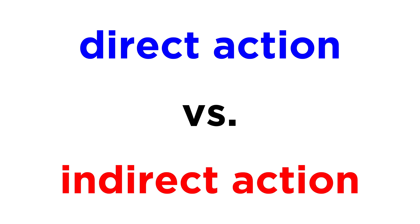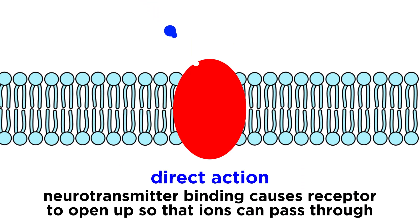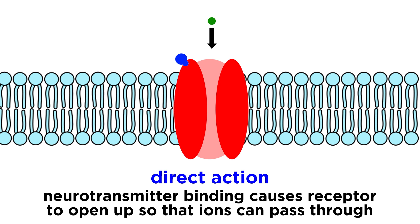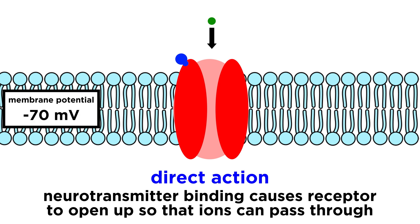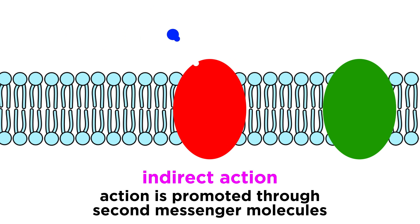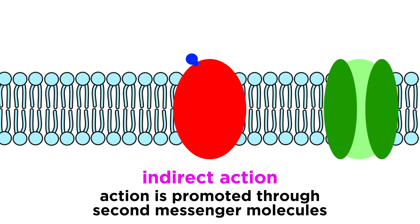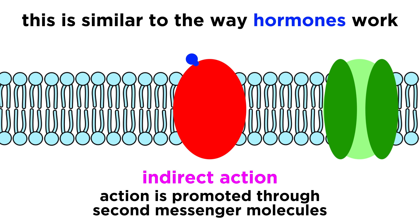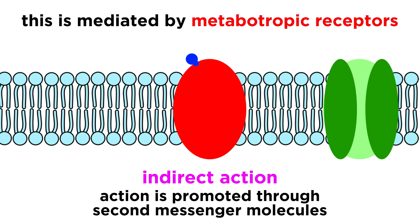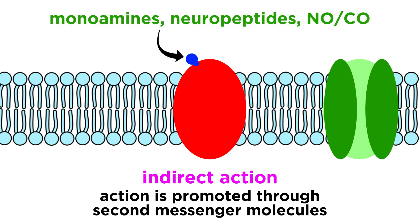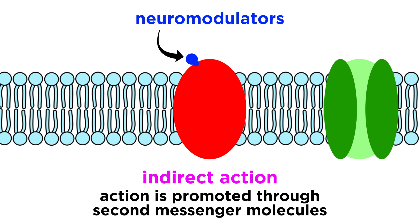Next we must distinguish between direct and indirect action. Direct action is when a neurotransmitter binds to an ionotropic receptor and opens it up so that ions can pass through, affecting the membrane potential and promoting rapid propagation of a particular effect. Acetylcholine and the amino acid neurotransmitters tend to behave this way. Indirect action is when the action is promoted through second messenger molecules, like the G proteins we discussed in the biochemistry series. This is similar to the way hormones operate, and the activity is mediated by metabotropic receptors. The monoamines, neuropeptides, and small gas molecules tend to exhibit this behavior, and when these act as chemical messengers in this manner, we sometimes call them neuromodulators.